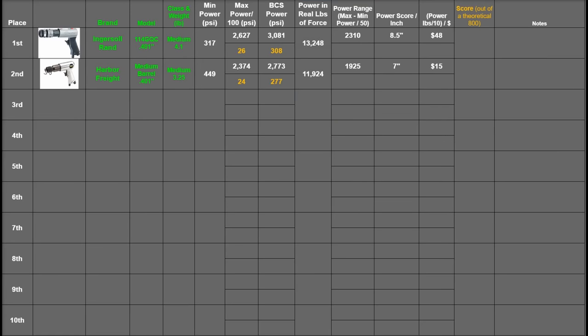The power range column hasn't changed. It's the max run minus the minimum run with only trigger use changing those two values. That's a wider range for the IR, so it gets more points: 46.2 and 38.5 for the Harbor Freight.